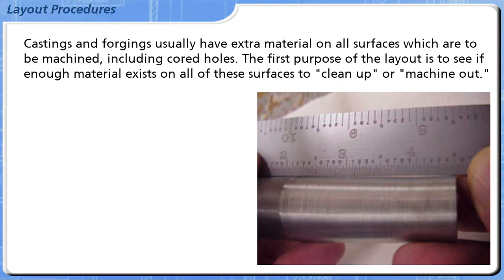Castings and forgings usually have extra material on all surfaces which are to be machined, including cored holes. The first purpose of the layout is to see if enough material exists on all of these surfaces to clean up or machine out.